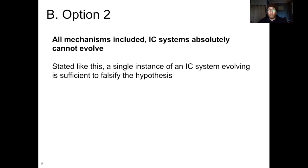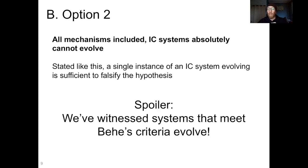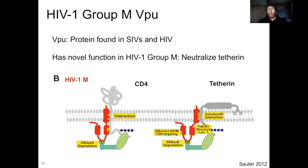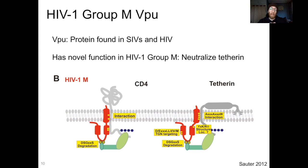So what do you think? Spoiler: we've witnessed systems that meet Behe's criteria evolve. I'm going to give you one example because it's something I'm very familiar with and find very interesting. It's a protein in HIV-1 group M called VPU. This protein is found not just in HIV, but in the SIVs — the simian immunodeficiency viruses — a related group of viruses that infect things like monkeys, chimps, and gorillas. HIV evolved from one of the SIVs; specifically, the main group of HIV evolved from one of the SIVs that infects chimps.